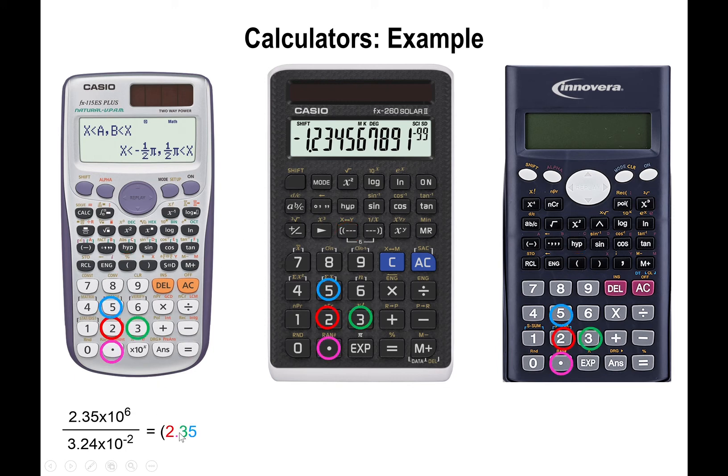Then you input the numbers 2.35. Then you press the corresponding button: times 10 to the 6, E to the 6. Then you close the parenthesis and press on the division button to start the division. What you've basically done with the parentheses is told your calculator everything inside the parenthesis is the number.